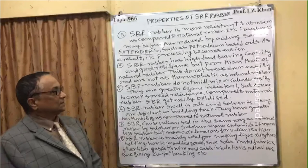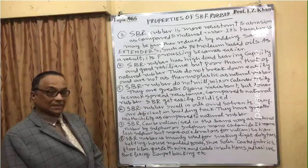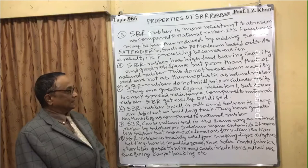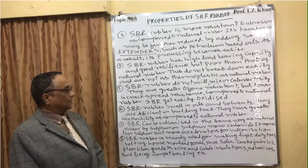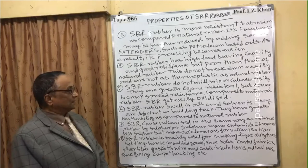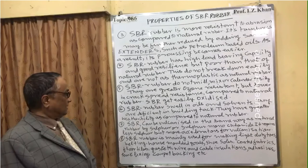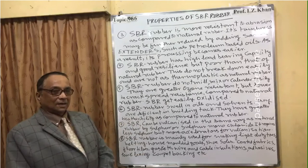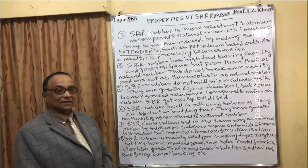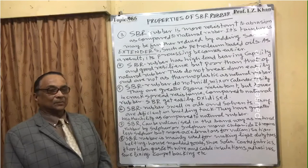Point five: SBR rubber does not mill, mix, or calender easily. They have greater ozone resistance but lower crack propagation resistance compared to natural rubber. SBR gets easily oxidized in the presence of air. Point six: SBR rubber swells in oils and solvents and is deficient in building tack. It has greater weatherability compared to natural rubber, meaning it can resist weathering and atmospheric oxidation more effectively than natural rubber.